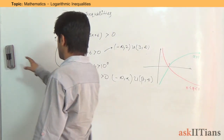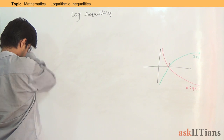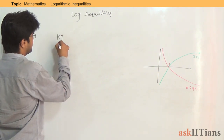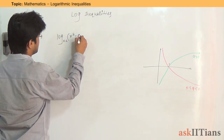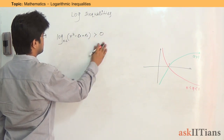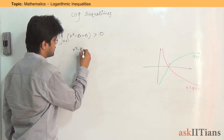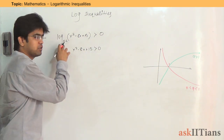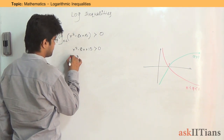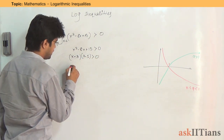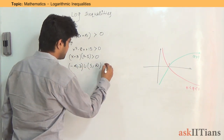Now let's move to a more complex question where the base is also variable — base is (x - 2), and the argument is x² - 8x + 15, greater than zero. First, regardless of whether the base is positive or negative, x² - 8x + 15 must be greater than zero. Factoring: (x - 3)(x - 5) > 0, giving the interval (−∞, 3) ∪ (5, ∞). This is our first condition.